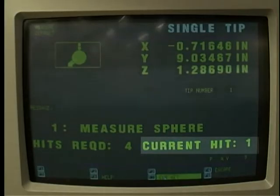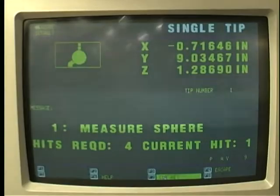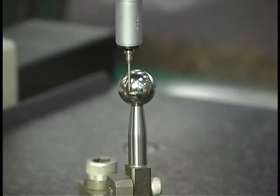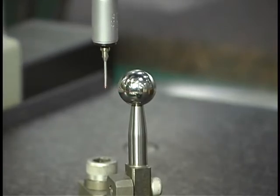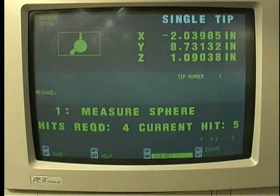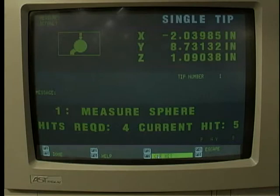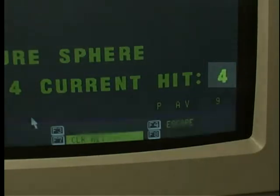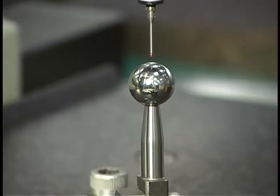On the computer screen, one hit has been registered. Additional hits are performed on the remaining three sides of the sphere using the same procedure. If a hit is made at a wrong location, it can be removed from the computer. At the bottom of the screen, a listing of other menu options is shown. Clicking on Clear Hit removes the last value entered into the computer.